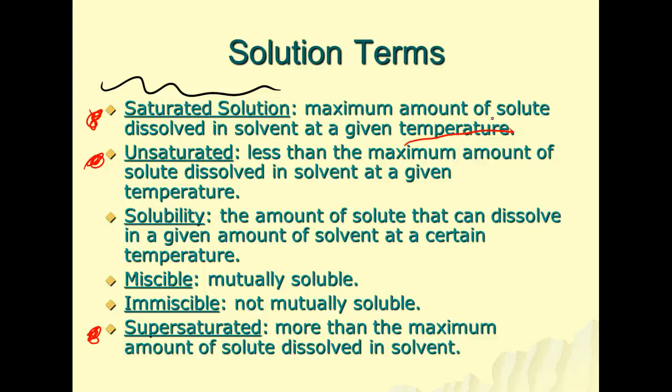A supersaturated solution—and I'll show you this in a demo on Monday—contains more than the maximum amount of solute dissolved in solvent. The way we do this is we can raise the temperature and then cool that solution slowly. As you'll see with the supersaturated solution, by adding one drop or one more crystal at room temp, all the crystals in the solution will come out of solution and we'll have this big solid glob at the bottom.